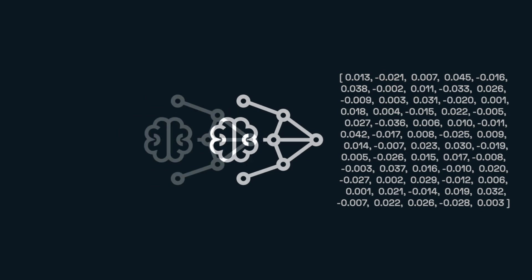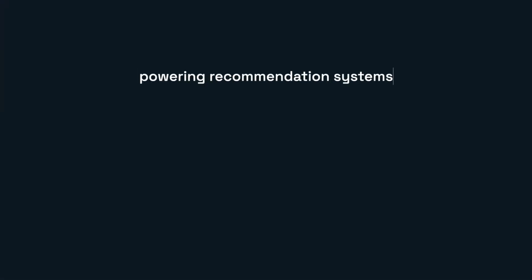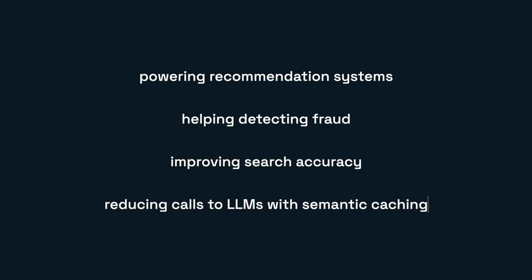These embedding models, especially when combined with vector databases like Redis — that allow you to efficiently store and search through vectors — open an array of possible applications like powering recommendation systems, helping detect fraud, improving search accuracy, and even helping support AI applications with semantic caching that speeds up and reduces the costs of LLM calls.